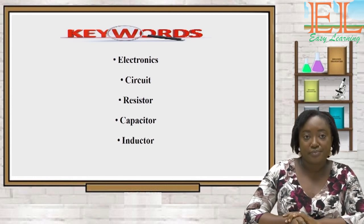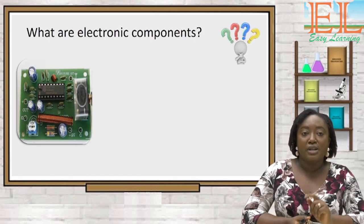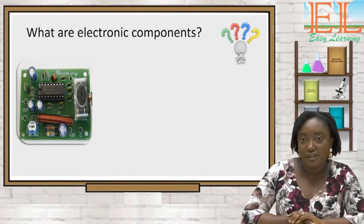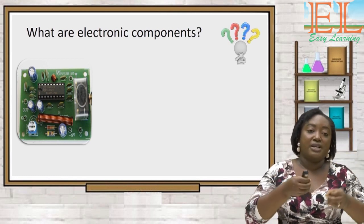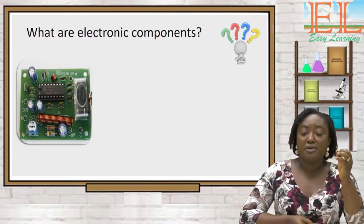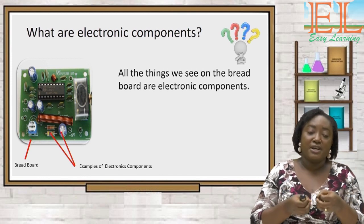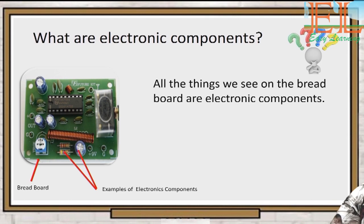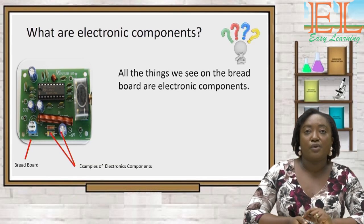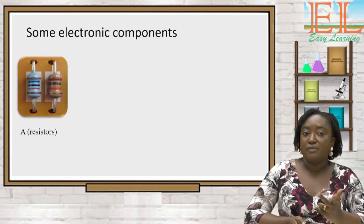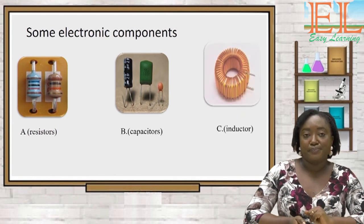What are electronic components? On the circuit presented at the beginning of the lesson, we find a green plate on which components are fixed. This green plate we call the breadboard. It is on this plate that we fix the devices that control electrons, making up the circuit. These devices that control electrons on the breadboard we call electronic components. For this lesson, we focus on three: resistors, capacitors, and inductors.